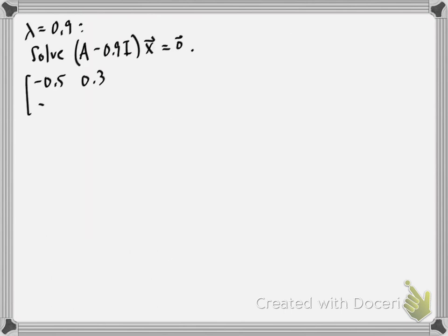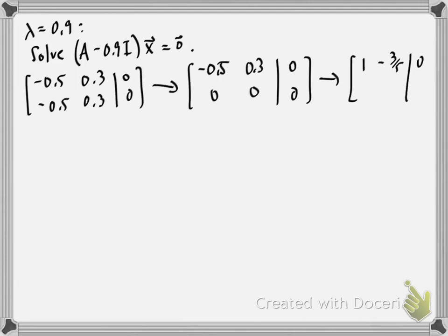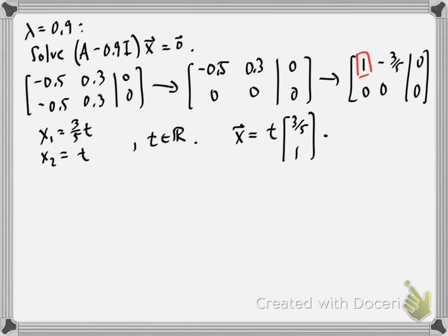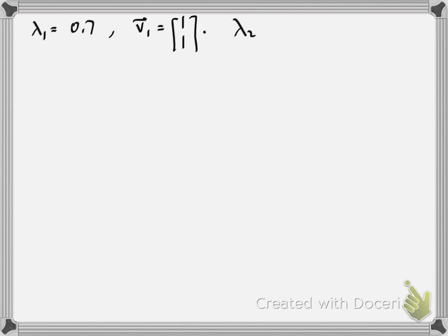For the eigenvalue 0.9, I'm solving A minus 0.9 times the identity all times x equals the 0 vector. Again, I set up the augmented matrix and row reduce to solve. I find my pivot here, which tells me x2 is free, so I'll call it t, and x1 is 3 fifths t. So in parametric vector form, x is t times 3 fifths, 1. I'm going to prefer to deal with an integer vector, so I'm going to choose t to be 5. And then I have this vector 3, 5. So to summarize, I have eigenvalue 0.7 with corresponding eigenvector 1, 1, and eigenvalue 0.9 with corresponding eigenvector 3, 5.